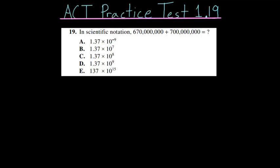The 19th problem in this first ACT practice test focuses on the concept of scientific notation. In scientific notation, 670 million plus 700 million are equal to what? With this problem, you can approach it two different ways. You can either add them together first and then change it to scientific notation, or you can change it to scientific notation first and then add them together. Since we have calculators, I'm going to first add them using the calculator.